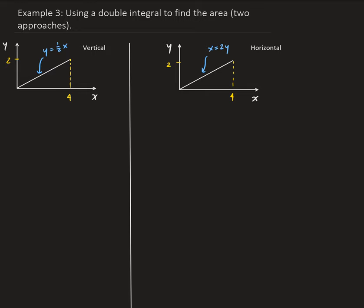The first approach will be using a vertical representative piece. So we're going to have our piece like this, which means this is going to be dx. In general, the area is the integral over the region, and dA is going to be dx dy. So we're integrating over that region.